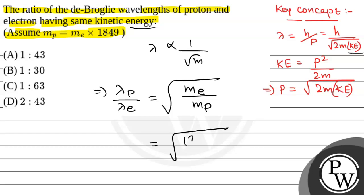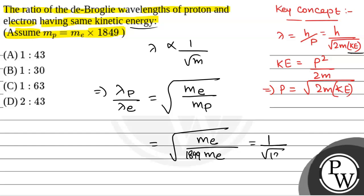That will be equal to root over mass of electron by mass of proton, which is 1 by 1849. So that will be equal to 1 by root over 1849, which is equal to 1 is to 43. So the correct option will be option A: 1 is to 43.